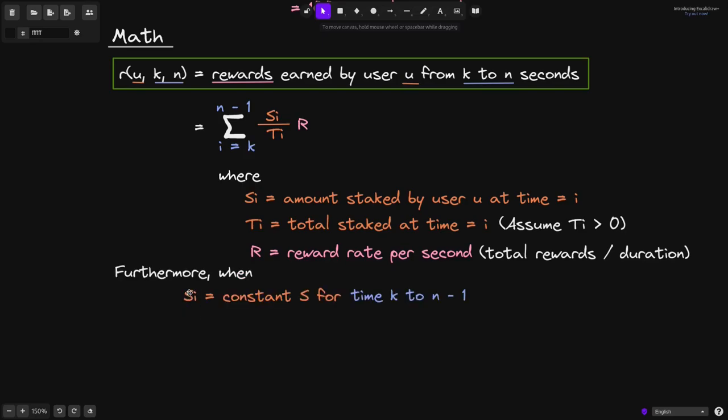Consider the case where s sub i, remember that s sub i is the amount staked by user u at time equals i, is a constant s from time t equals k to n minus 1. In this case, we can simplify this equation.